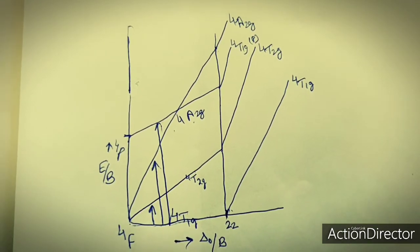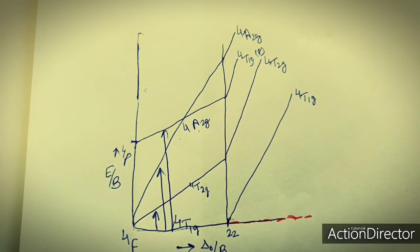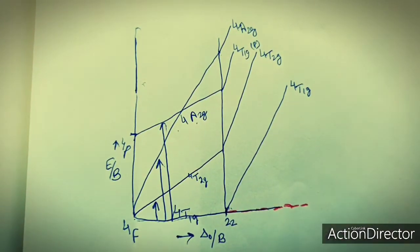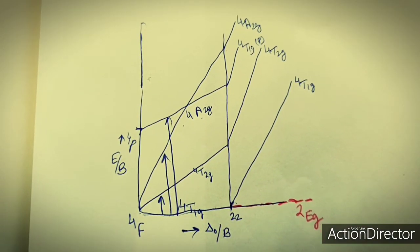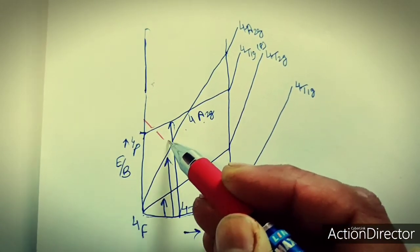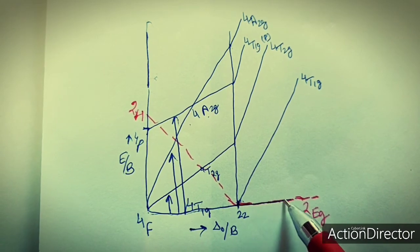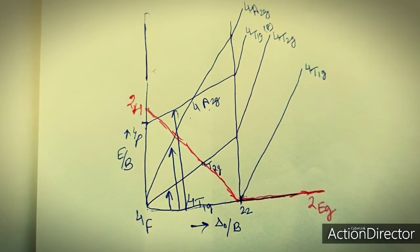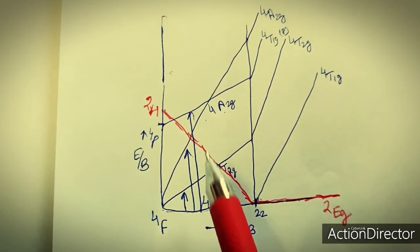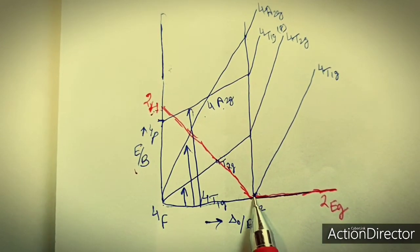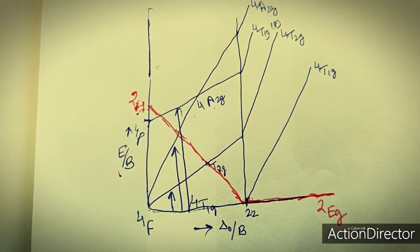For the right side of ΔO/B = 22, we draw using red color. The red dotted line shows the ground state term for the strong field complex, which is 2EG. This 2EG is generating from the 2H term, shown with a red line. So 2H generates the 2EG ground state term. After the crossover point, the energy of 2H decreases until at ΔO/B = 22 the ground state becomes 2EG, which then remains constant as the ground state for the strong field complex.